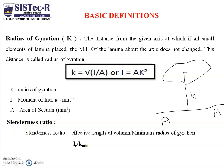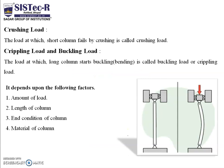The second definition is the slenderness ratio, which is the ratio of the effective length of the column to the minimum radius of gyration. Le represents the effective length of the column and k is the minimum radius of gyration. Crushing load is the load at which a short column fails by crushing. The long column fails by bending, which is called buckling load or crippling load. The load at which a long column starts to buckle is called the buckling load. It depends on the amount of load, the length of the column, end conditions, and the material of the column.